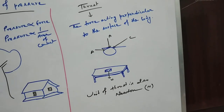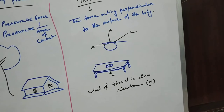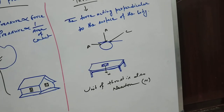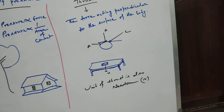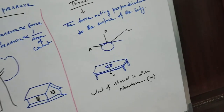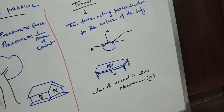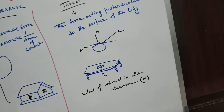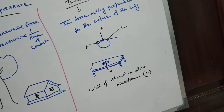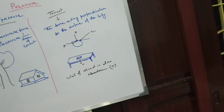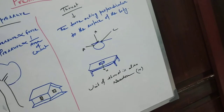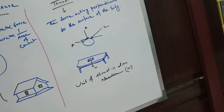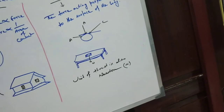Thrust is a kind of force that acts perpendicular to the surface of a body. Among the three forces A, B, and C, only B is perpendicular to the surface, so only B is considered thrust. The weight of an object always acts in a vertically downward direction, so weight can also be considered thrust. Since thrust is a kind of force, the unit of thrust and the unit of force are the same — both are Newton in SI.